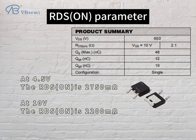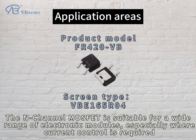At VGS 4.5V, RDS(ON) is 2750 mΩ. At VGS 10V, RDS(ON) is 2200 mΩ. This N-channel MOSFET is suitable for a wide range of electronic modules.